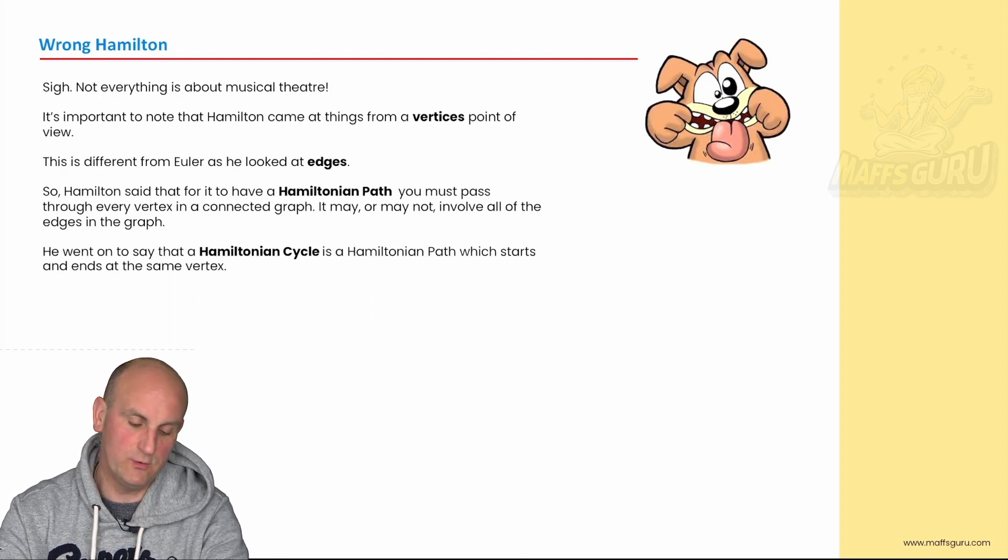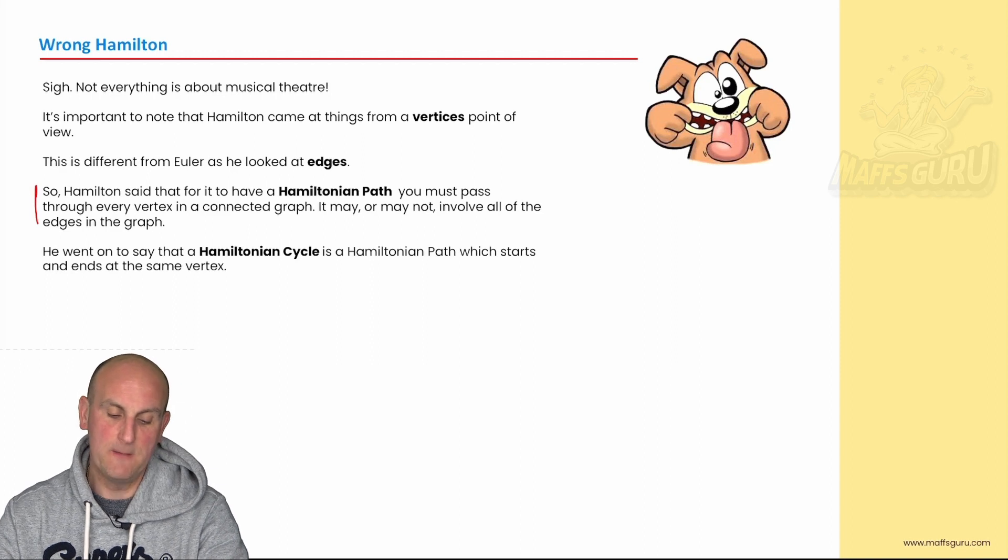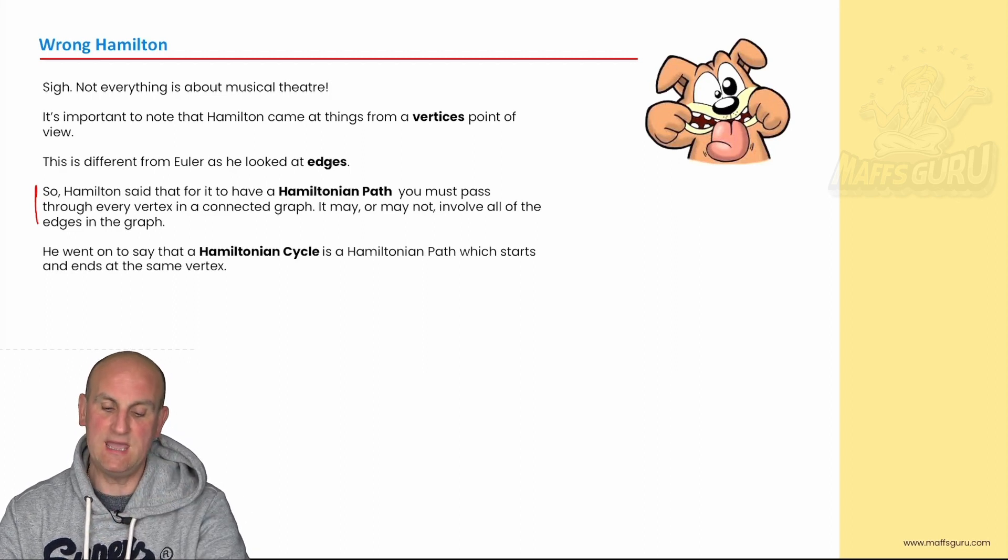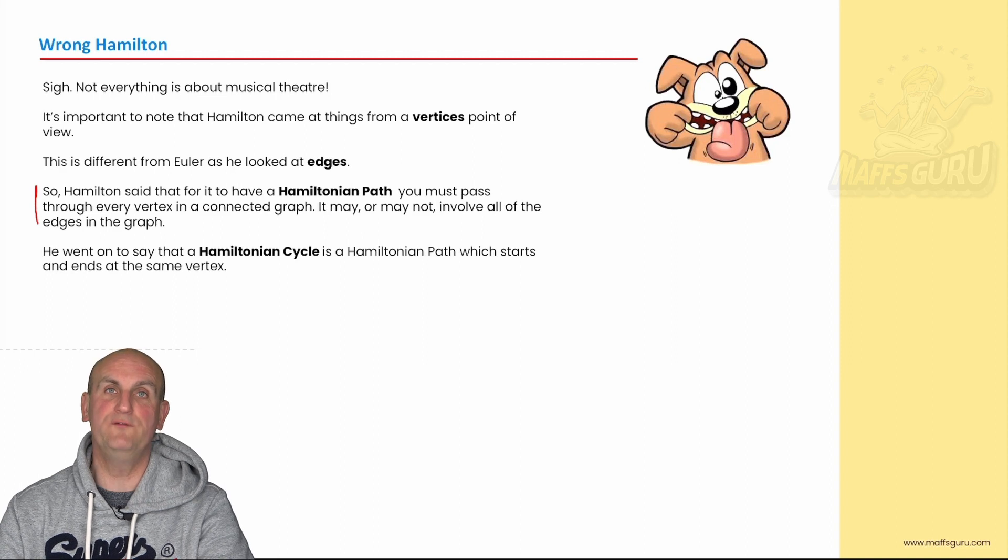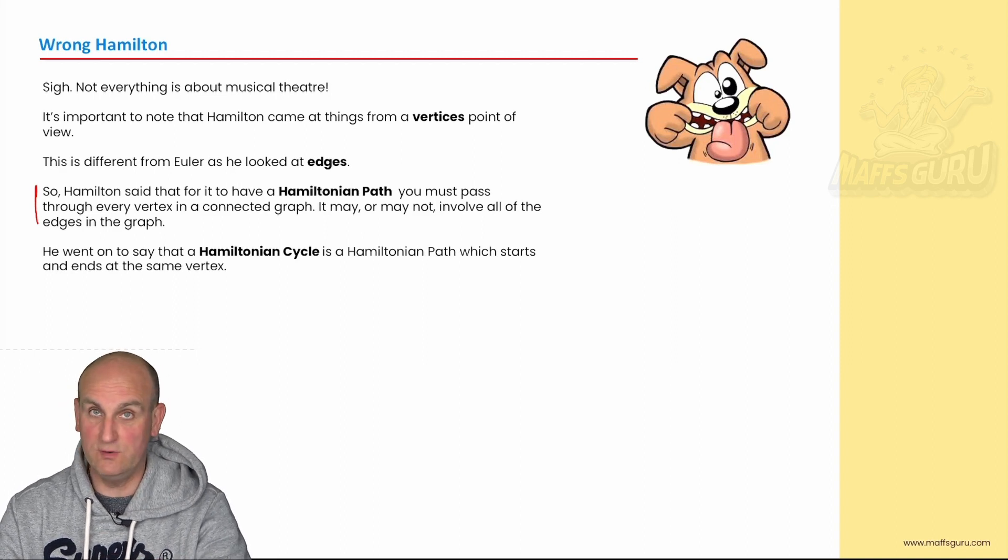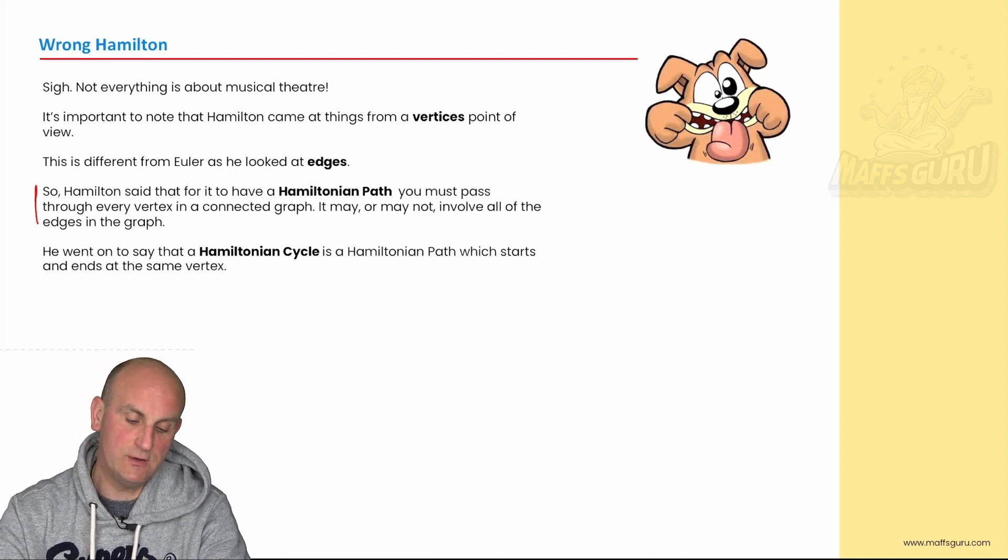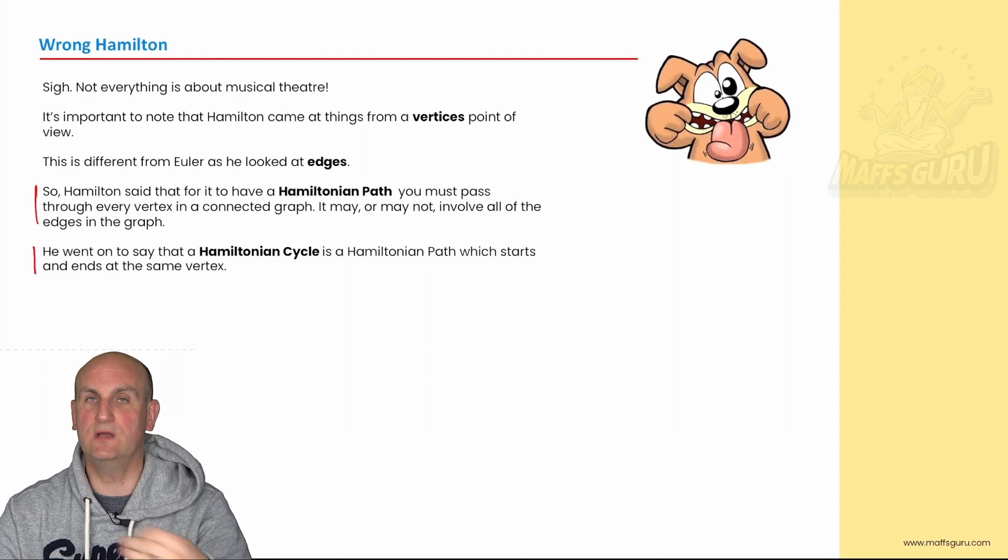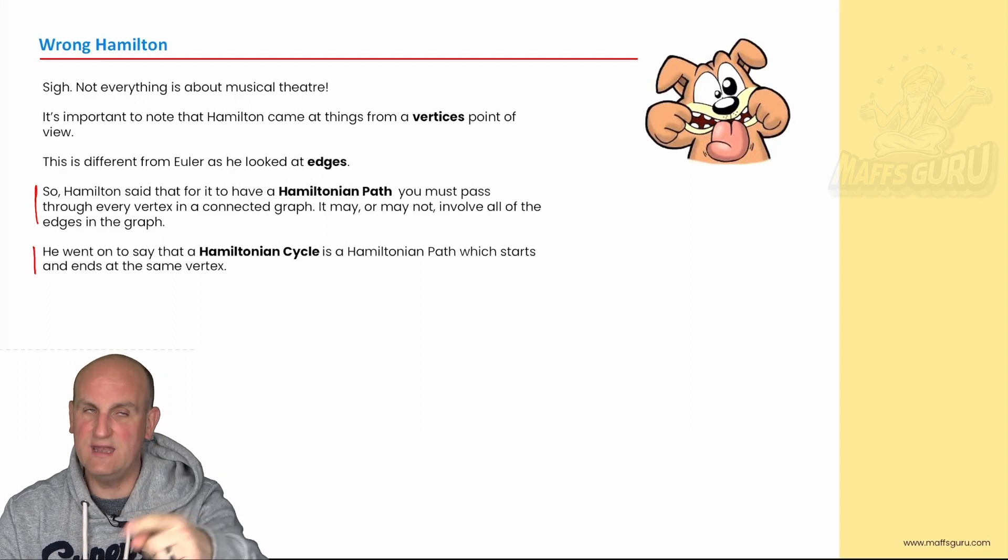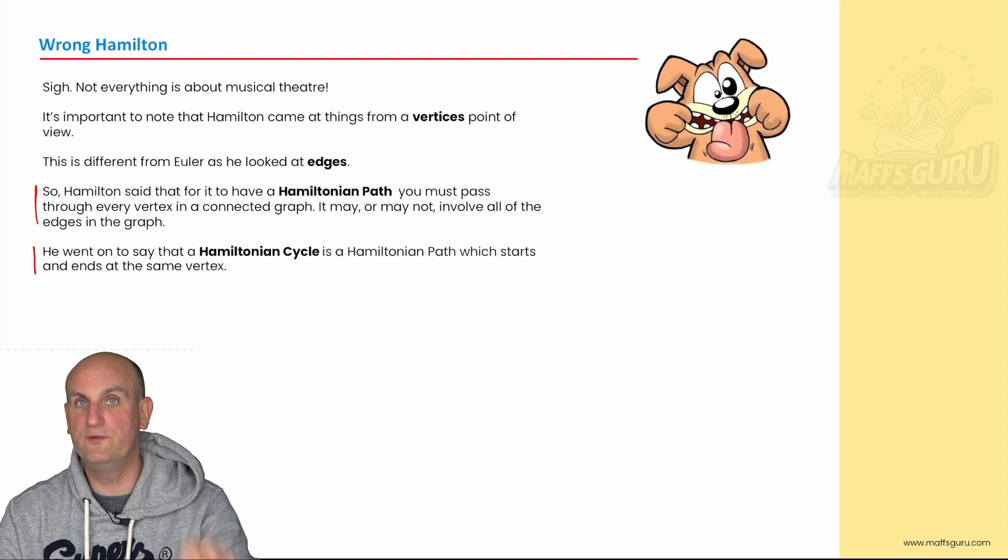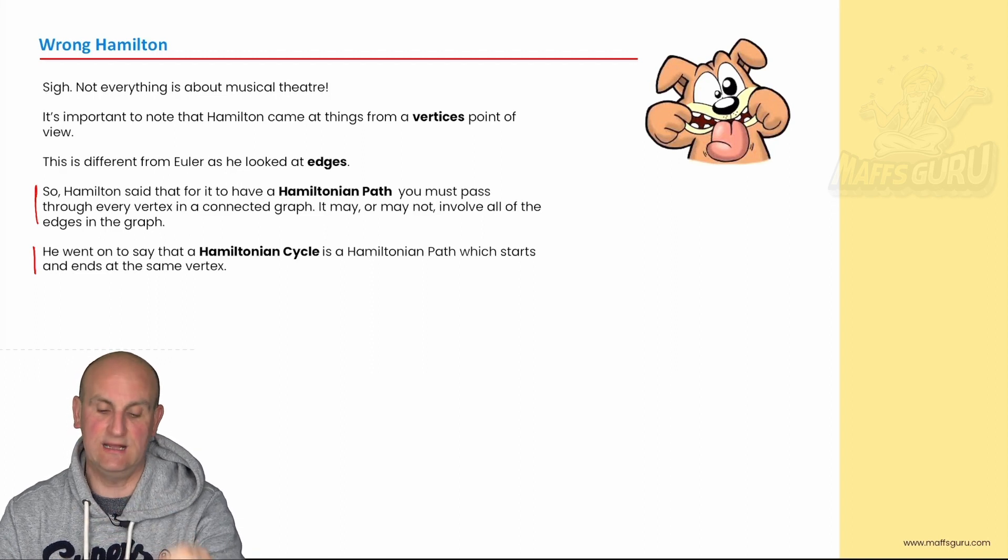So for your summary book, a Hamiltonian path must pass through every vertex in a connected graph. Now again connected, no loners. It may or may not involve all of the edges in the graph. You could just go around the outside if needs be. A Hamiltonian cycle, we know that a cycle starts and ends at the same vertex. Again it would have to go through all of the vertices starting and ending at the same one.